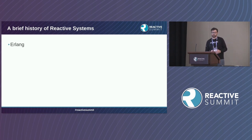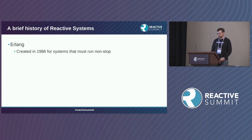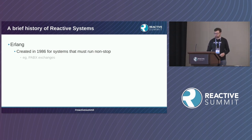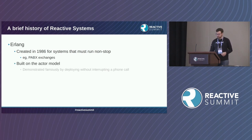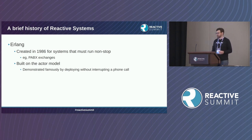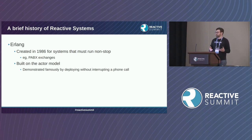Over the years there have been a few Actor model implementations. One of the major ones was Erlang, which was created in 1986 for systems that must run non-stop — for example, PBX exchanges. Erlang was built on the Actor model, and there's a great demo from 1986 where developers show fixing a bug and redeploying a system while it was running, without interrupting an existing phone call.